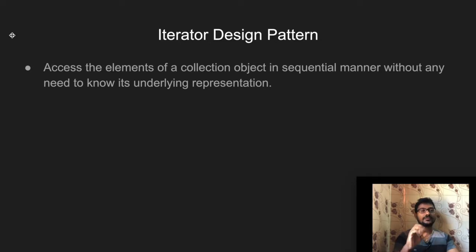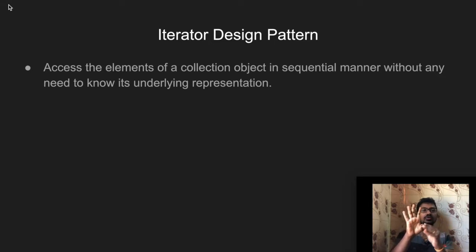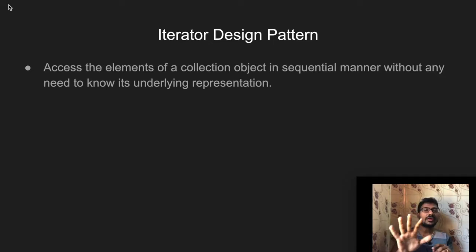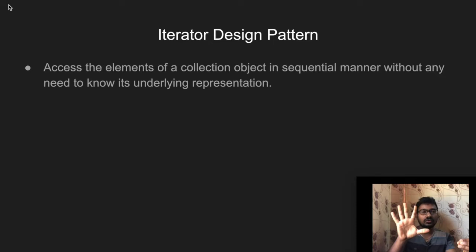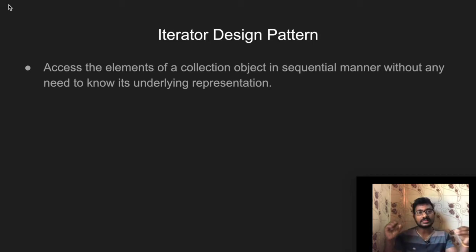A collection object, for example, contains 5 data items: student 1 information, student 2 information, student 3, student 4, student 5. The iterator will traverse these — student 2, student 3, student 4, student 5 — accessing each object's data.